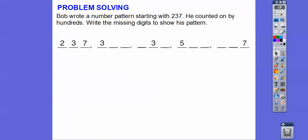Alright, so Bob wrote a number pattern starting with 237. He counted by hundreds, so write the missing digit to show his pattern. So here's 237, so we're just changing the hundreds digit, because that's all Bob is doing, is adding hundreds. So this will be 300, same two digits for the tens and the ones, so this would be 337. And then this will be 437. 537, those don't change. And finally, 637 right there.